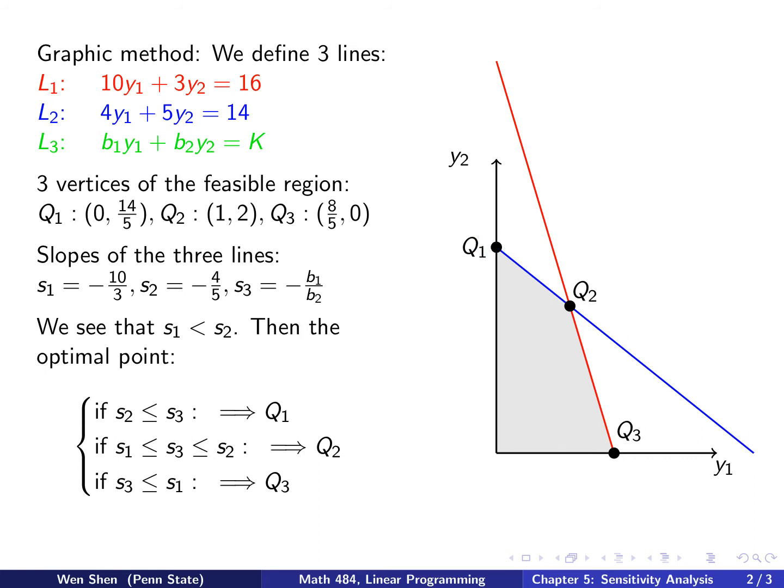and then depending on the relationship of S3 with respect to S1 and S2, we have three situations. So the first one is that S3 is bigger than S2. S2 is the bigger one among S1 and S2, which means the lines will be going less steep than the blue one. Okay? Maybe going like this. And then you move this up and down, and it will hit q1. So q1 will be your optimal point.